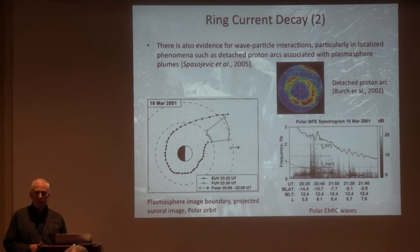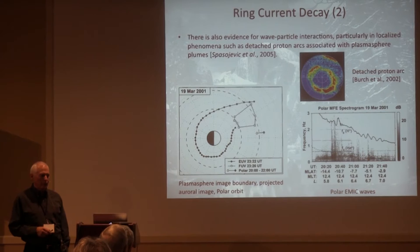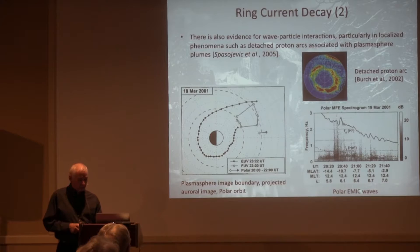I think there's probably a lot there. The reason we can't nail it down is we don't really have the ability to determine the global distributions of ion cyclotron waves to put into a model.